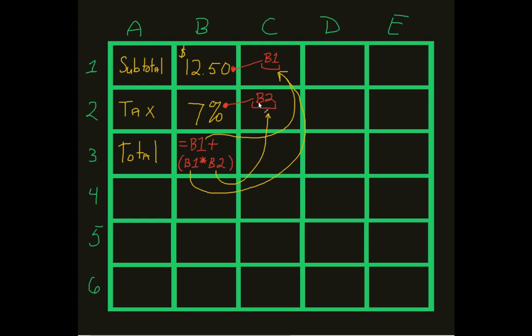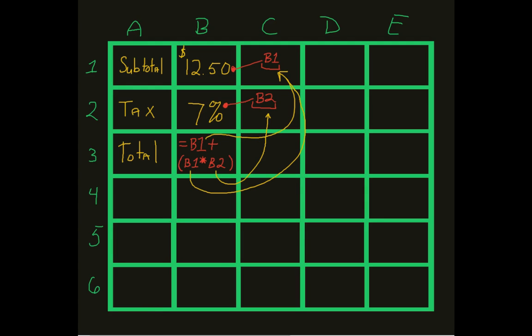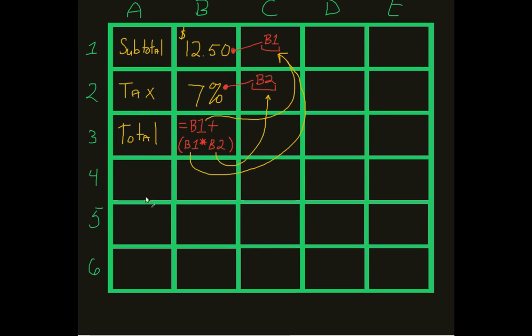And then it takes all of those numbers, and it places them in, and then, and only then do I get the math equation of, let me scroll down a little bit. Only then do I get the math equation of 1250 plus 1250 times 0.07.